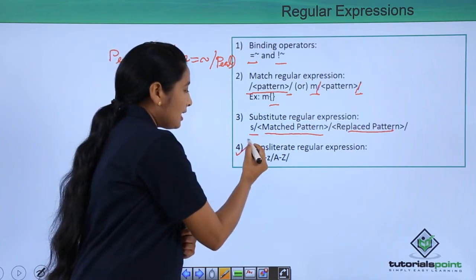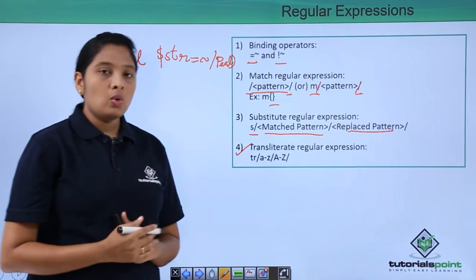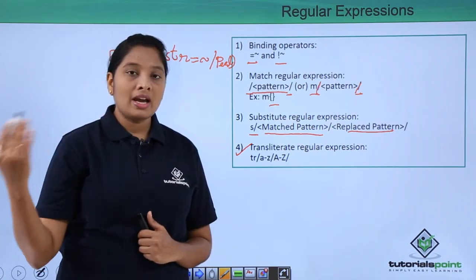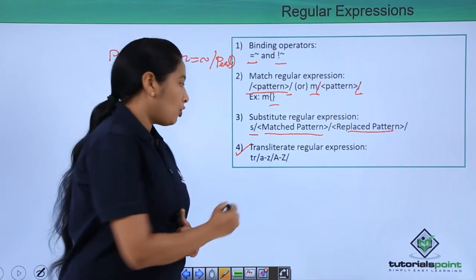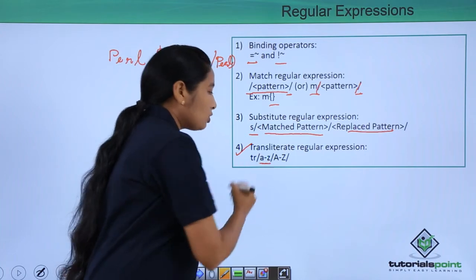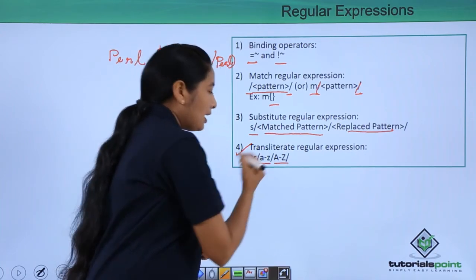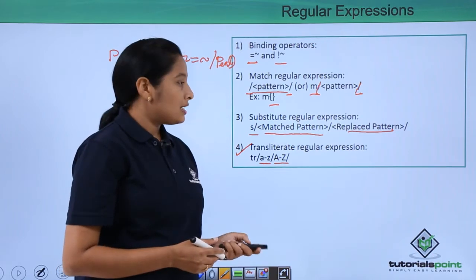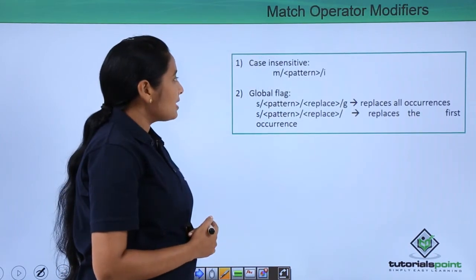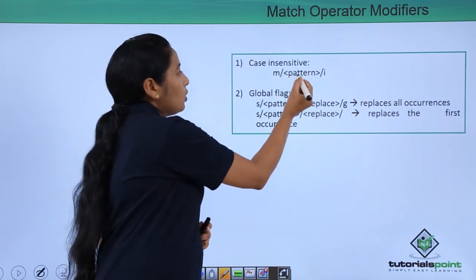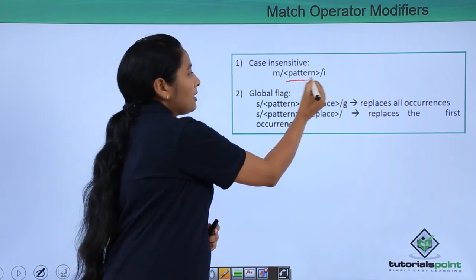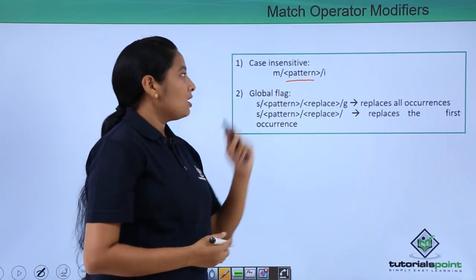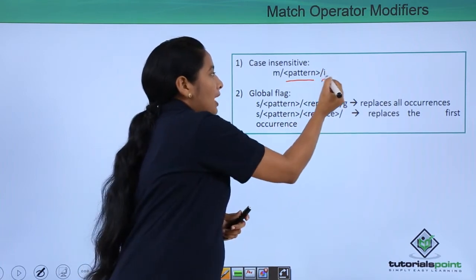Next is the transliterate operator. If you want to convert some string of letters to some other case — for example, if you want to convert small a-to-z to capital A-to-Z — then you can use a transliterate operator. Next is case insensitive: if you want to match patterns that are not case sensitive, then you can just use the slash i option at the end.